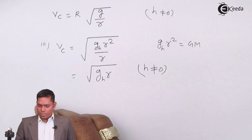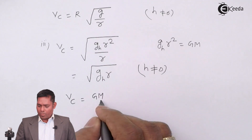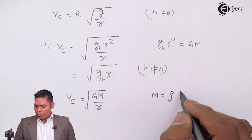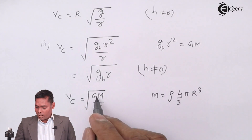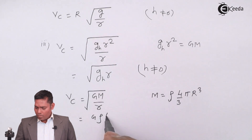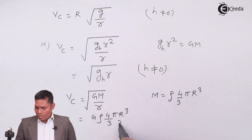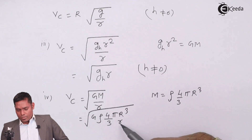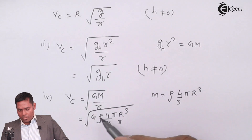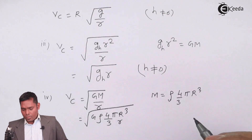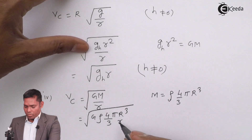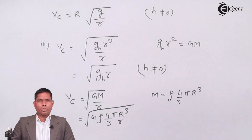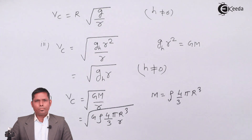We can also replace mass M in terms of density. Writing M equals density times volume equals density times (4/3)·π·R³ and substituting into Vc equals square root of GM over r, for a satellite very close to the surface r cancels with part of R³ leaving an r² term, giving another expression for critical velocity in terms of density. These are the different forms of critical velocity.